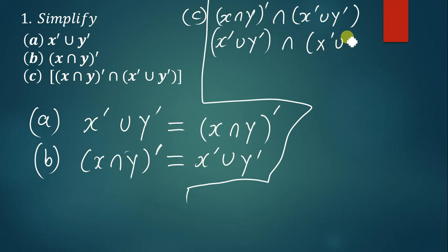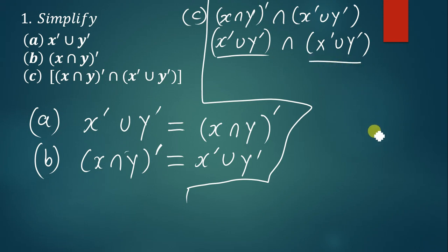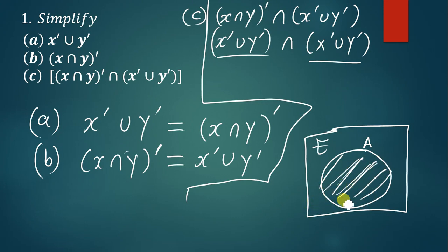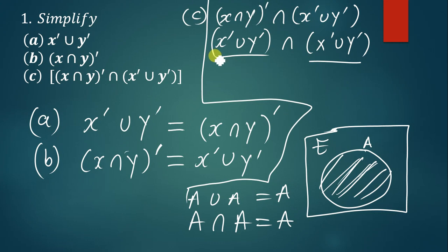Remember how we deal with sets: if you have a set A and you find the intersection of set A with the same set A, you get A. So A intersection A equals A. The same applies to A union A — that also gives A. Now, this set is the same as that set, so this set intersection with itself — the answer is simply going to be that same set.